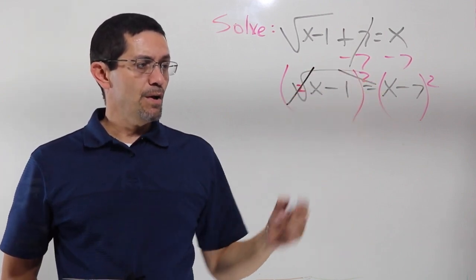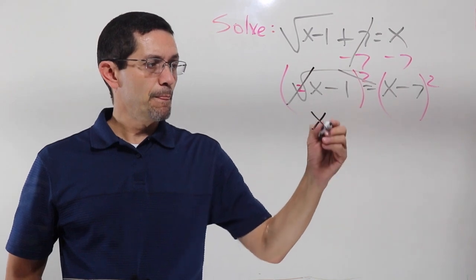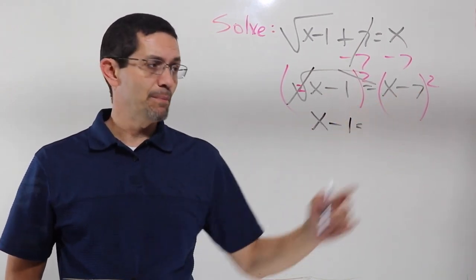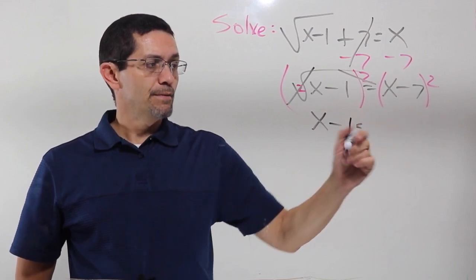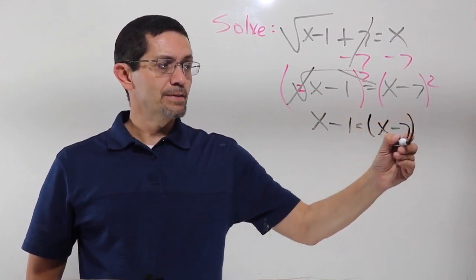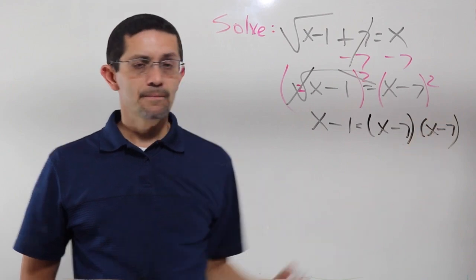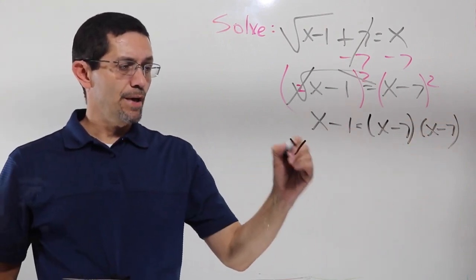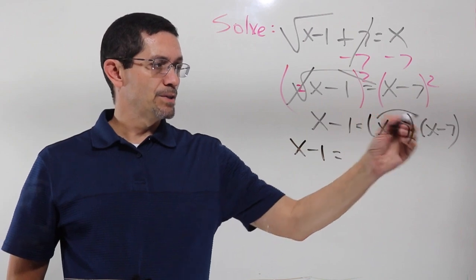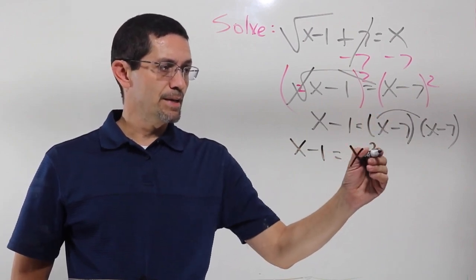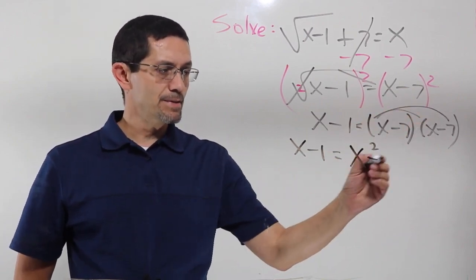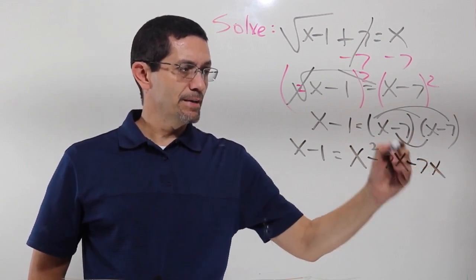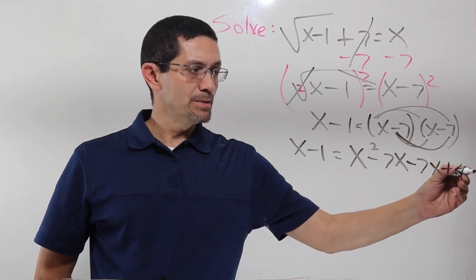The square root cancels. I have x minus 1 on this side, and on the other side I have x minus 7 to the second power, which means x minus 7 times x minus 7. I've got to solve that doing FOIL. So x minus 1, and now let's multiply: x times x is x squared, x times negative 7 is negative 7x.